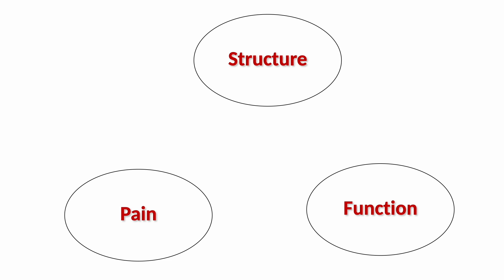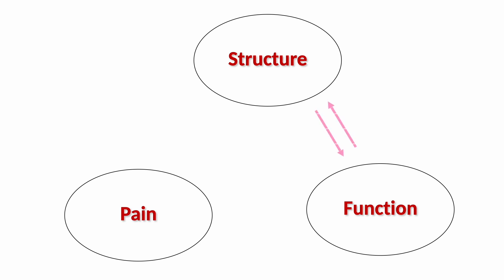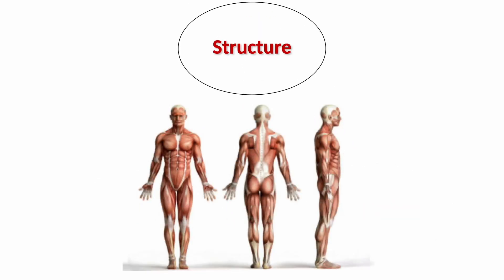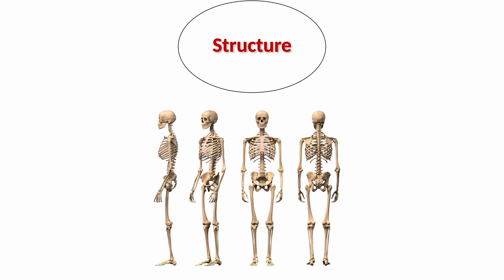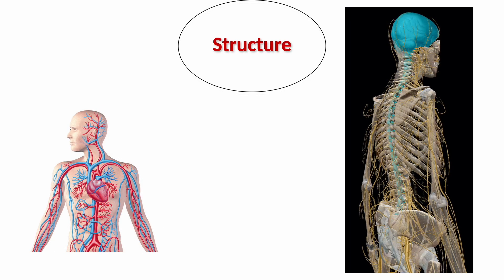Here is the diagram showing the relation between structure, function, and pain in the musculoskeletal system. Let me talk about structure first. The human musculoskeletal system consists of muscles, tendons, bones, and joints. There are other systems as well, such as the circulatory system and nervous system.